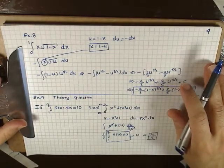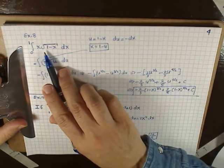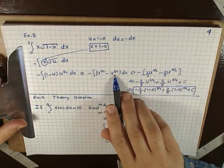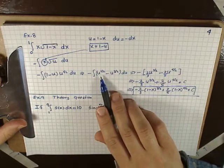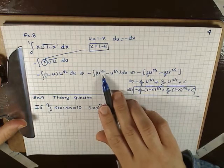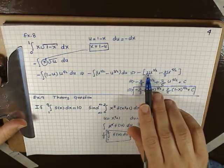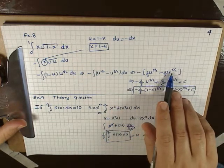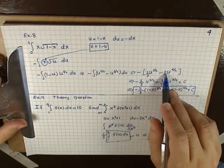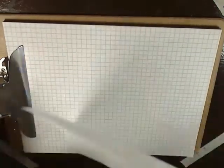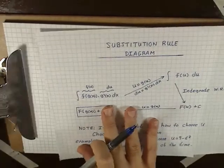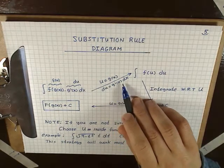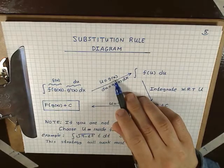Let me clarify some steps. In the integral of x·√(1 − x) dx, at the step with integral of u^(1/2) − u^(3/2) du, we integrate term by term using the reverse power rule. For u^(1/2): add 1 to the exponent to get u^(3/2), then divide by 3/2, which is the same as multiplying by 2/3. For u^(3/2): add 1 to get u^(5/2), then divide by 5/2, which is the same as multiplying by 2/5. Also, in the substitution rule diagram, du = g'(x) dx and u = g(x).